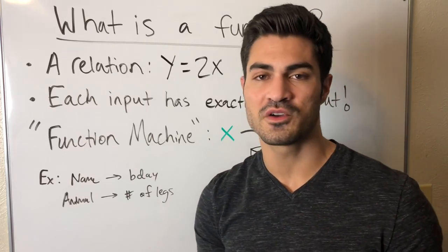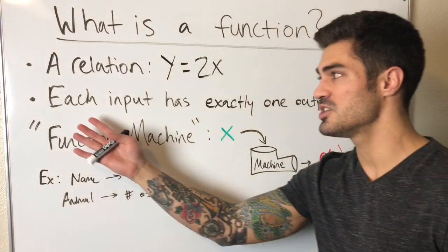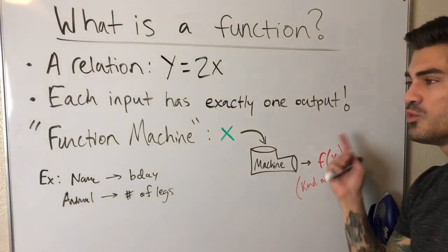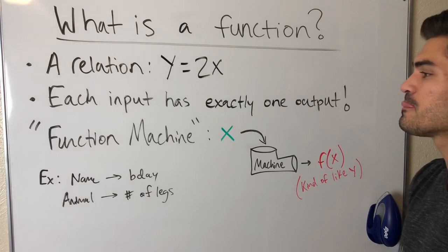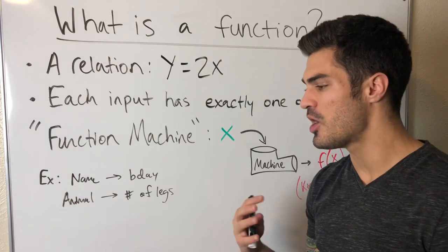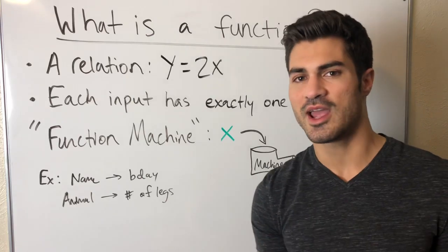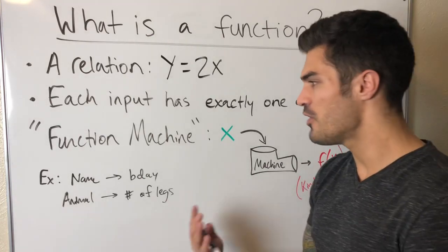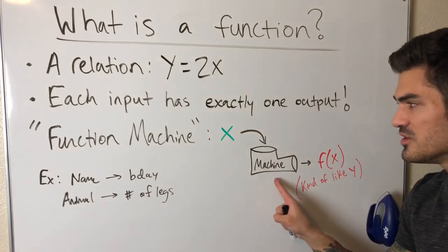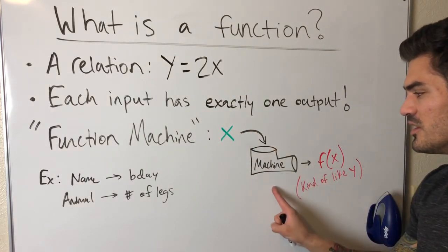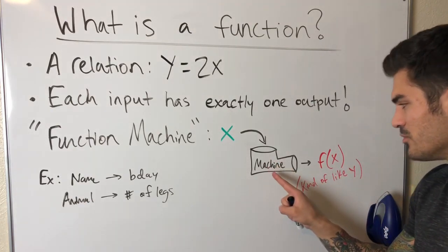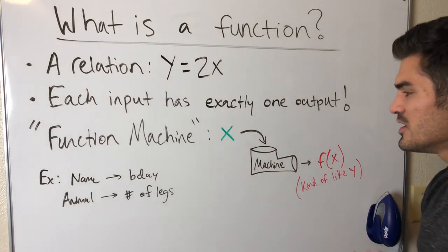A function is a specific kind of relation where each input has exactly one output. Think of it like a function machine: you have an input that you put into the function machine, and it spits out an output — it does something to that input and produces a result.